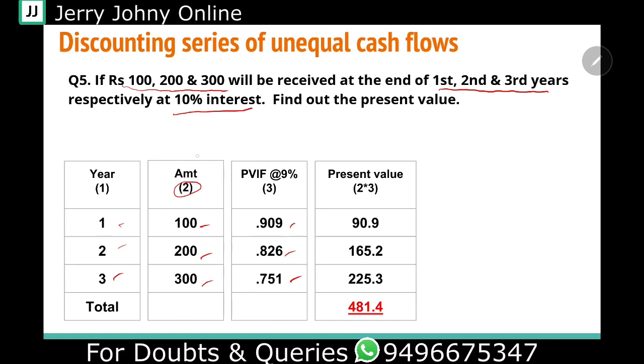Multiplying using the table: 100 into 0.909 equals 90.9, and 200 into 0.826 equals 165.2.